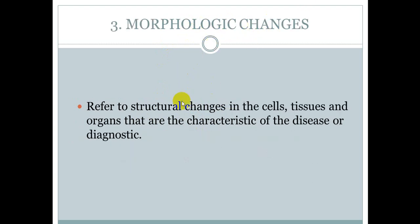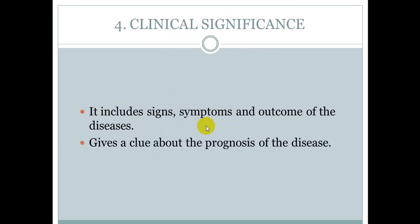Third is morphological changes. This refers to structural changes in the cells, tissues and organs that are characteristic of the disease or diagnostic. Ab jo cells and tissues mein changes aa jaate hain — structural changes — that is morphological changes.